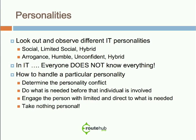So how do you handle a particular personality? First, you need to determine which personality is your conflict. For me, a person who comes off very arrogant and very social is a conflict. How do you handle that? If you're working on something — like as a consultant — and I work with another consultant with a conflicting personality, I do what is needed before that person is involved. If I need to configure a BGP neighbor, I just do it. Keep the conversation to a minimum. Engage the person with limited, direct communication about only what is needed.